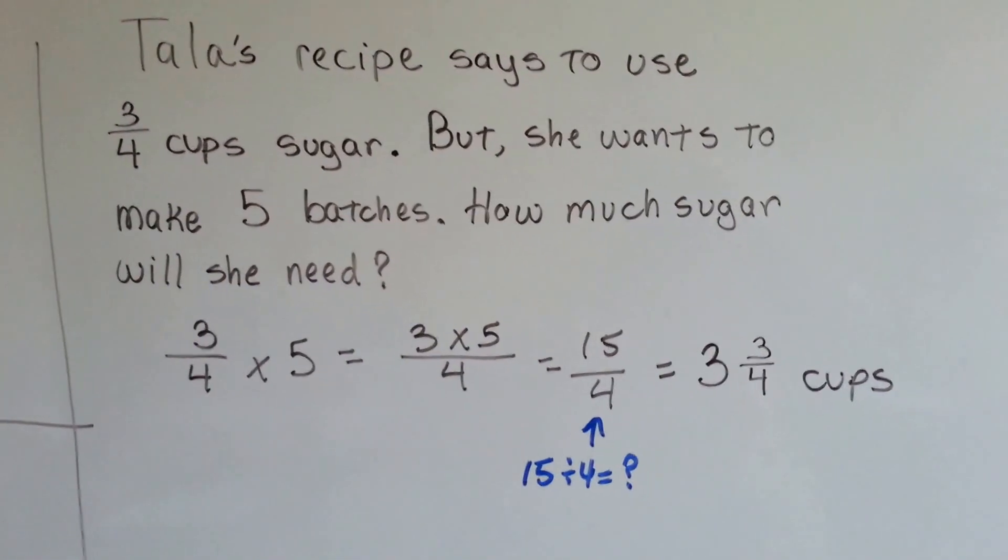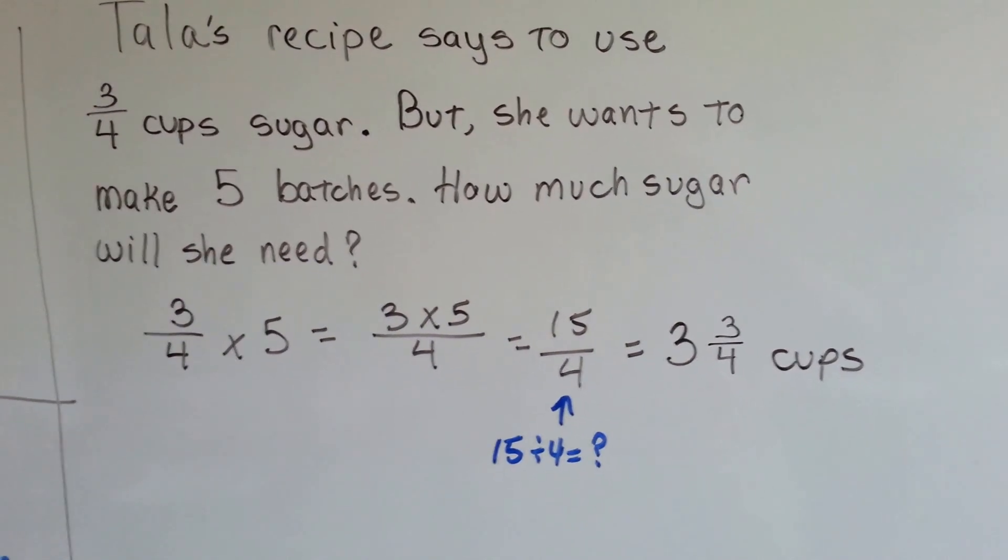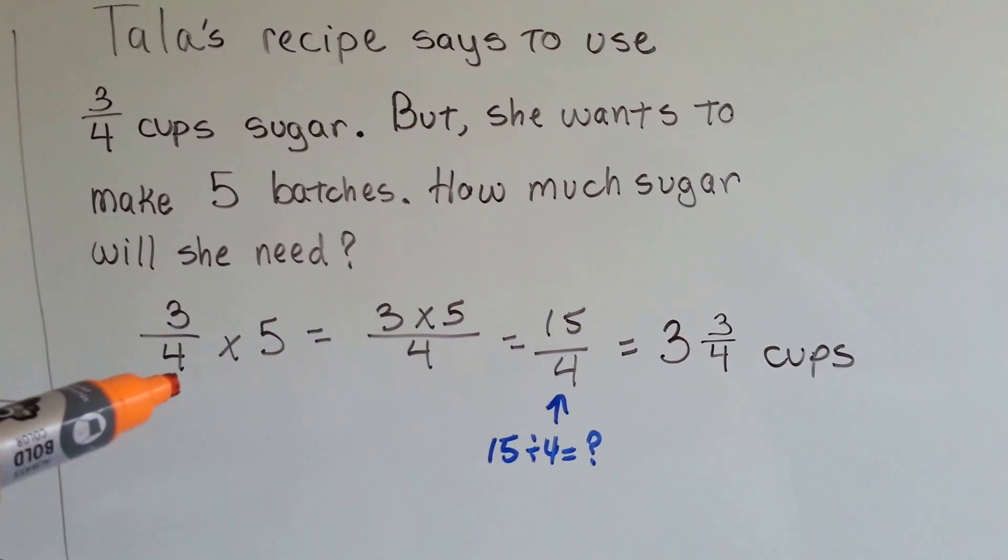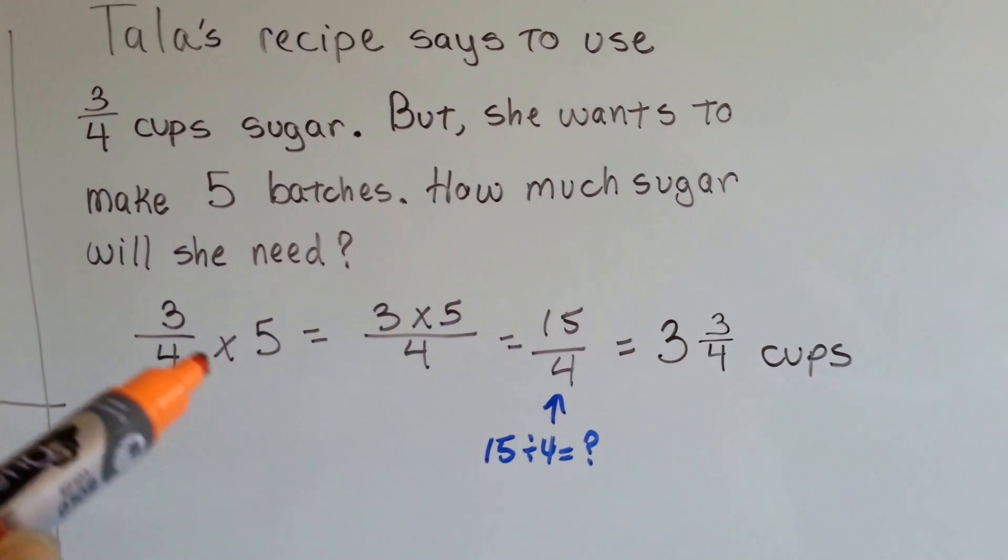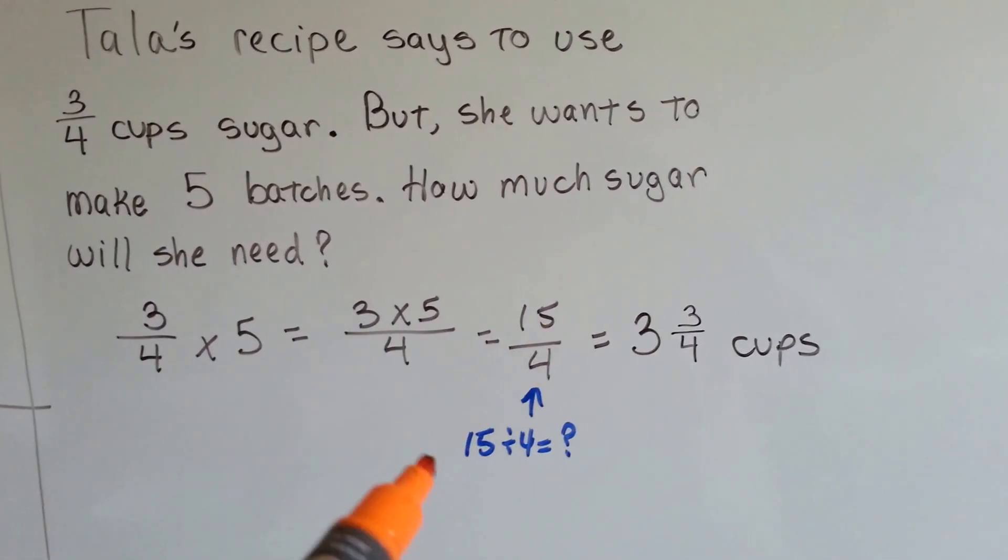Tala's recipe says to use 3 fourths cup sugar, but she wants to make 5 batches. So how much sugar will she need? We're going to do 3 fourths times the 5 batches. So we're going to put the 3 times 5 over the 4. That's 15 over 4.